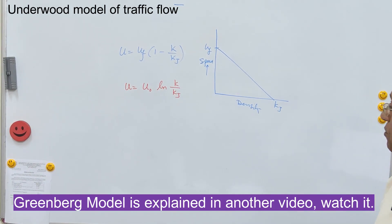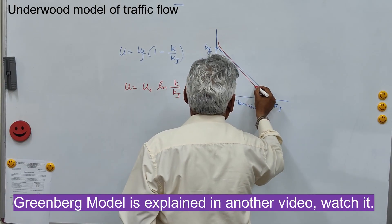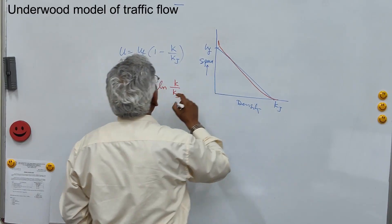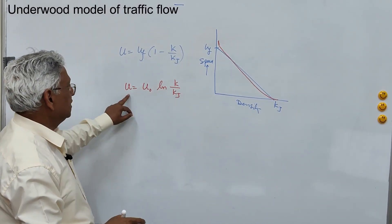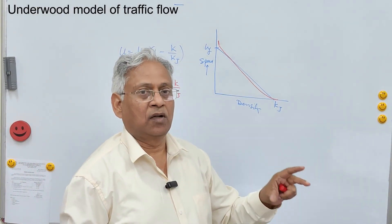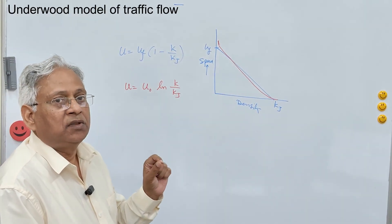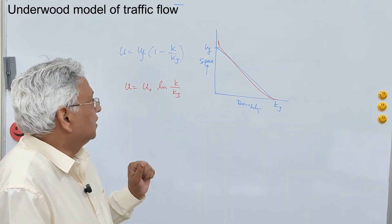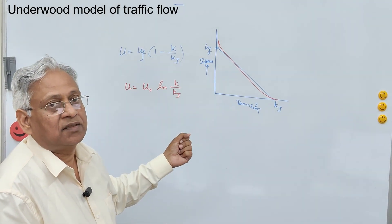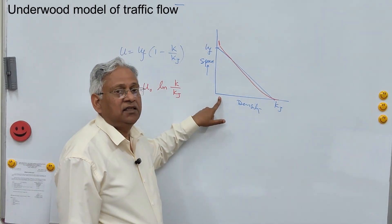Now this model is like this. When the density is zero, then speed becomes infinite — so this is not a good model. Although the Greenberg model gives a better goodness of fit compared to the Green Shield equation, it is not applicable for light traffic conditions because it estimates that the speed at zero density is infinite.